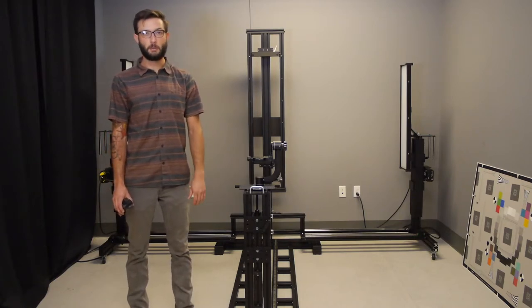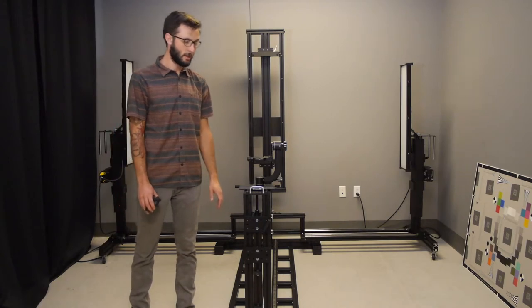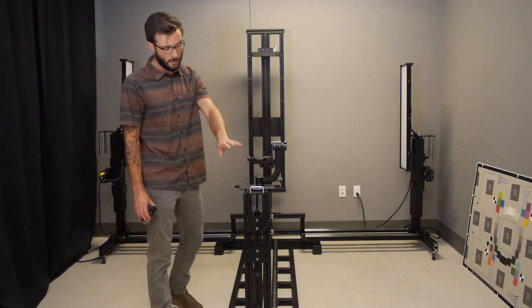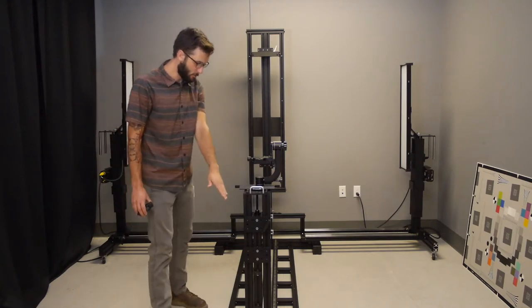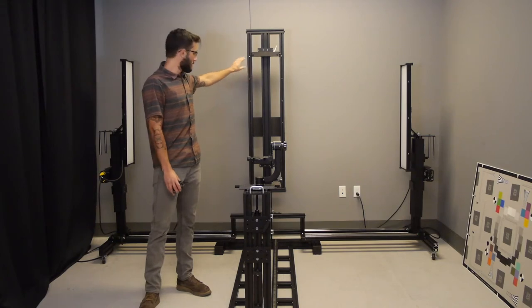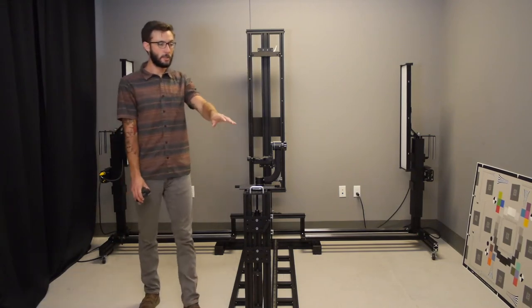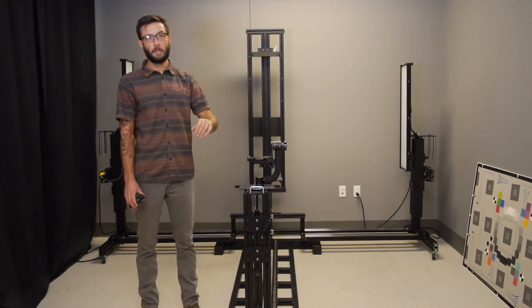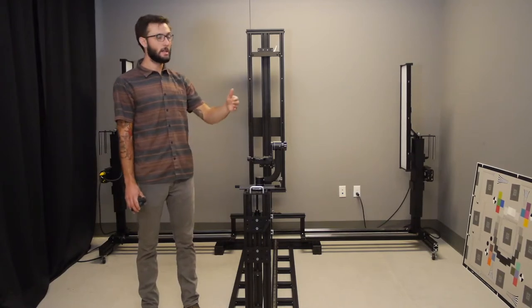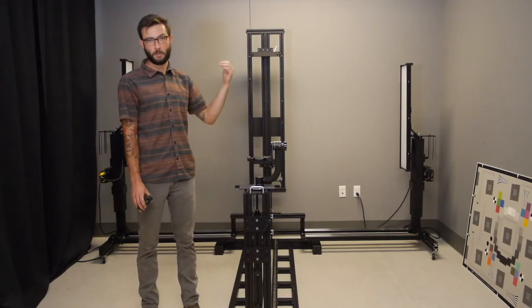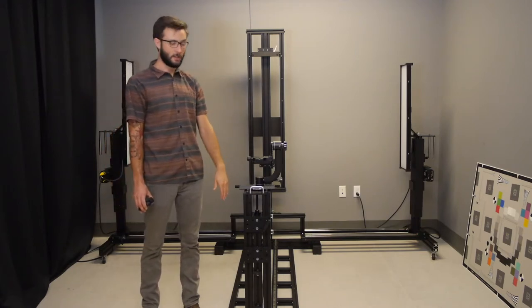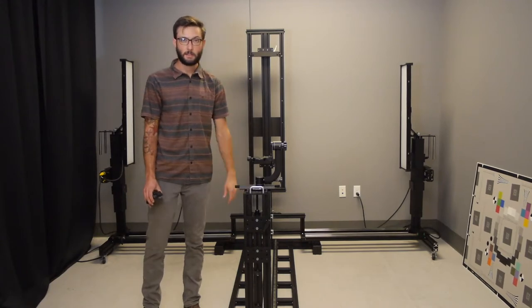So before we get into that I want to go over the system real quick. The base module of the modular test stand consists of the camera post, the camera rail on the floor, and the chart holder in the back. These three components allow for really reliable and robust alignment between the camera and the charts you're using for your testing.